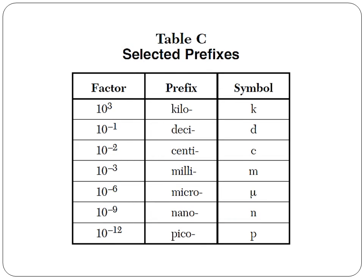For reference table C, we have selected prefixes of the metric system. In the first column, we have the factor. In the second column, we have the prefix. And in the third column, we have the symbol for the prefix.